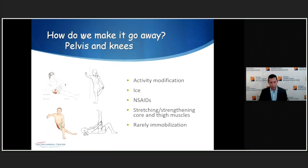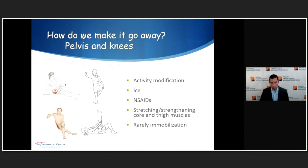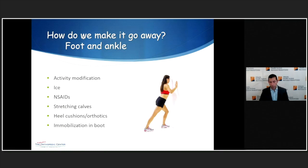For the pelvis and knees, since the quadriceps, hamstrings, and gluteal muscles are the major offenders, treatment includes activity modification with ice and anti-inflammatories, plus stretching and strengthening of the core and thigh muscles. With the rarest of exceptions, we'll put somebody in a knee immobilizer only if their Osgood-Schlatter's is severe enough. For the foot and ankle, the main intervention is stretching out the calves. With Sever's disease, putting cushions in the heels of shoes provides helpful cushioning. For Iselin's, more so than Sever's, I may put them into a boot.